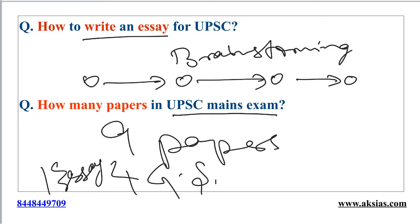Paper 4 is called Ethics, Integrity and Aptitude. Paper 3 broadly deals with economic development, science and technology, as well as disaster management including internal security. In Paper 2, you have issues like governance, polity, international relations, and social justice. In Paper 1, you have Indian society, world history, Indian history, art and culture, geography, and certain other phenomena.